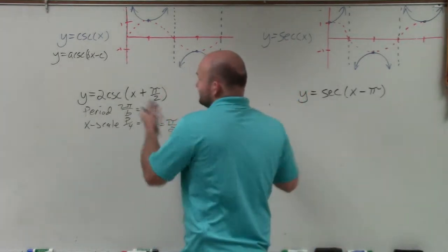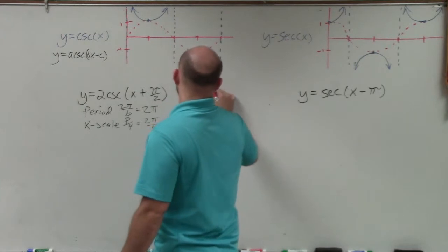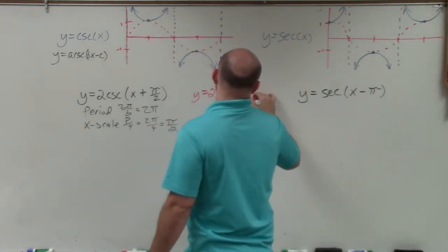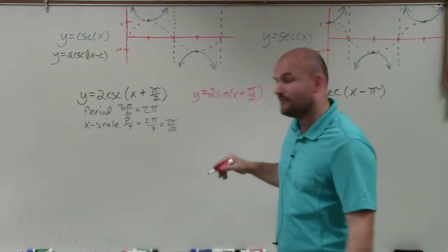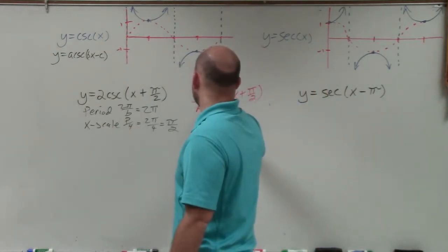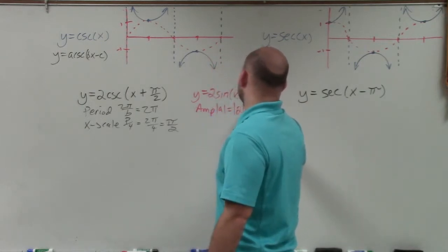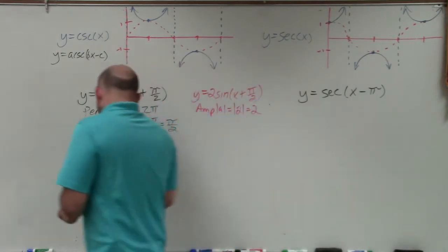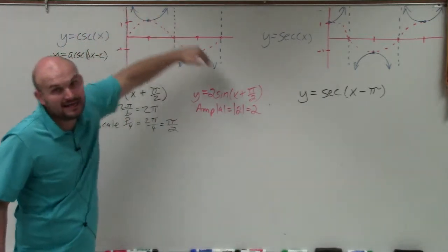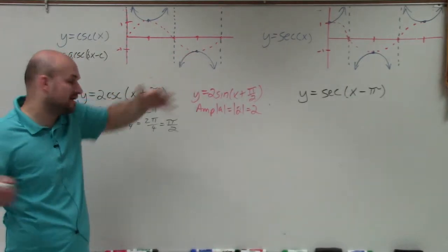So for y equals 2 sine of (x + π/2), I need to figure out the amplitude, which is the absolute value of a — the absolute value of 2, which is just 2. I'm going to use that information because in the reciprocal function, that tells us how high and low the graph can be — basically the max and the min.